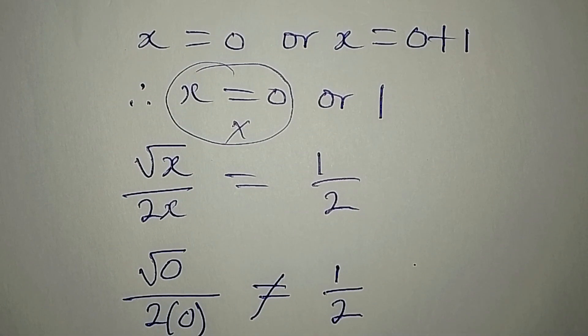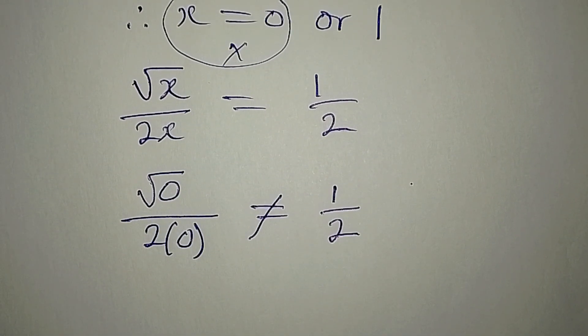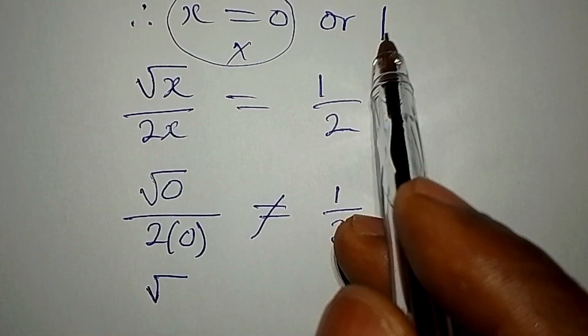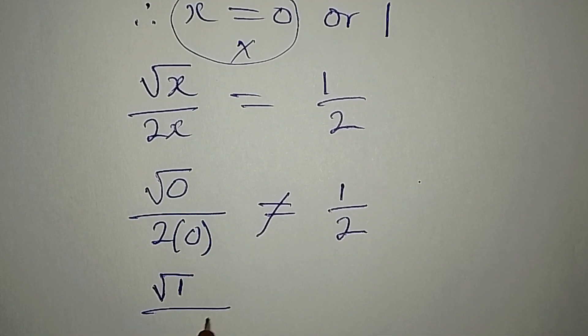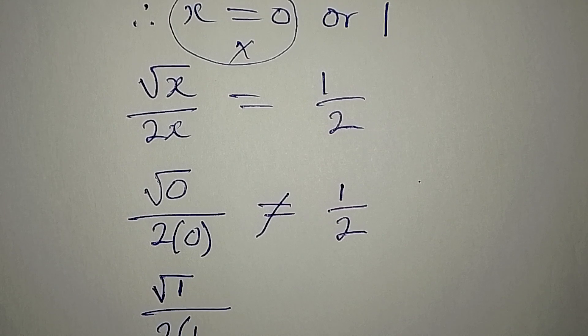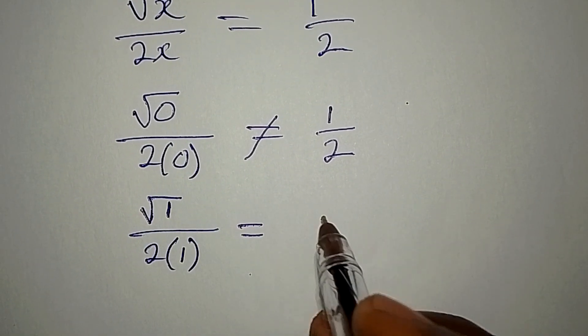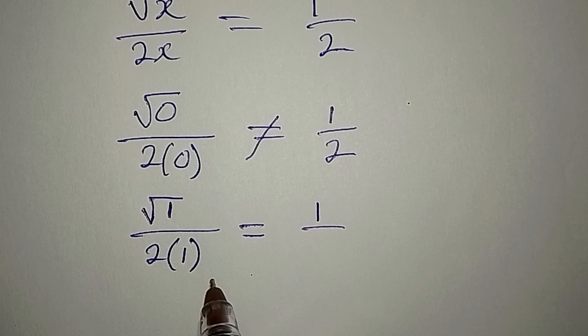Now let's work with the second value of x. Square root of 1 over 2 times 1, because x is 1, and this is going to give us 1 over 2 times 1, which is 2.